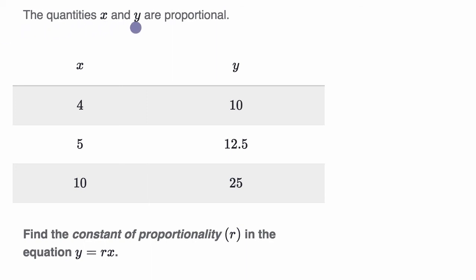We're told the quantities x and y are proportional. And then they give us a table where they give us a bunch of x's and then they give us the corresponding y's. When x is four, y is 10. When x is five, y is 12.5 and so on and so forth.